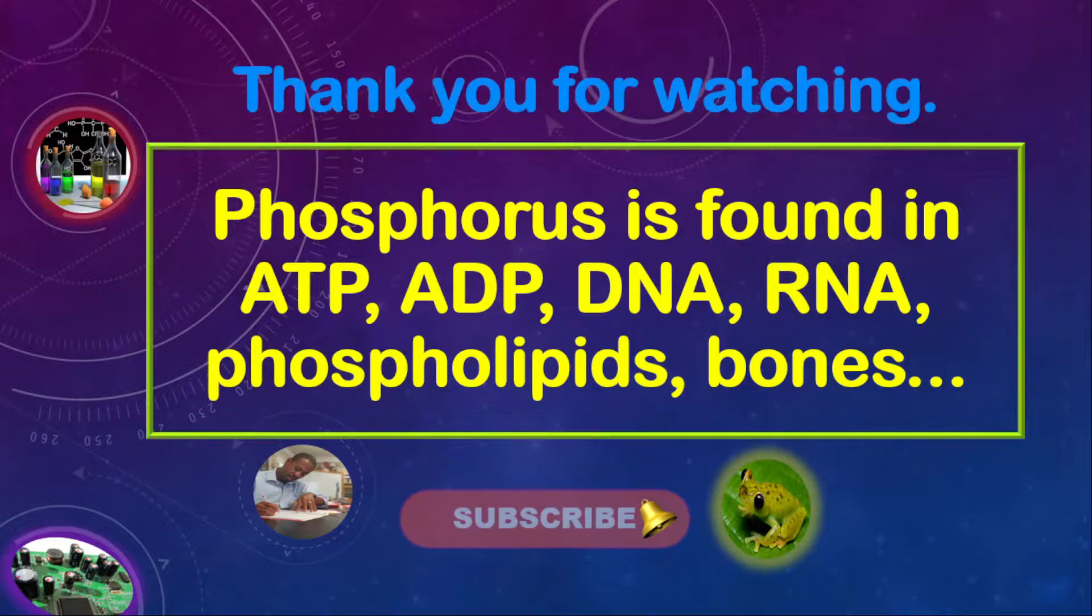Phosphorus is found in ATP, ADP, DNA, RNA, phospholipids, bones, and so on. Thank you for watching. Have a great day.